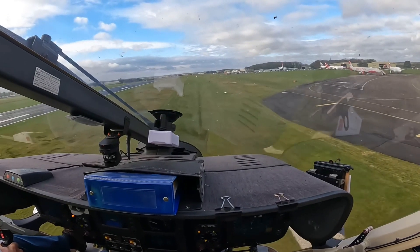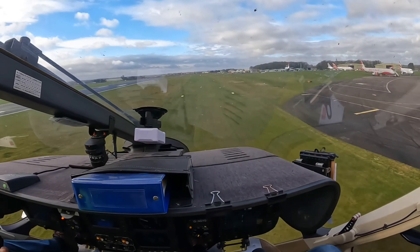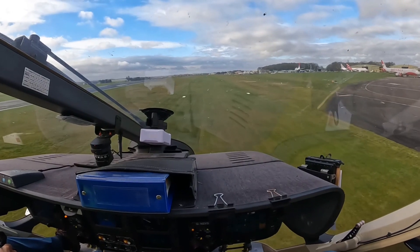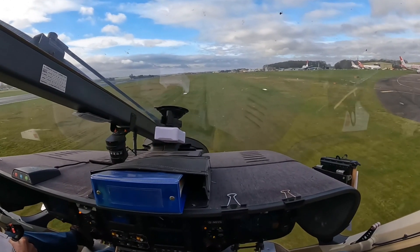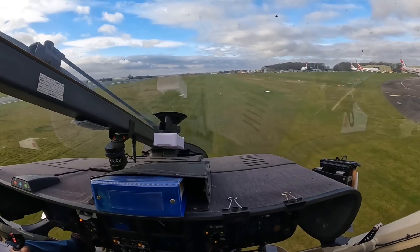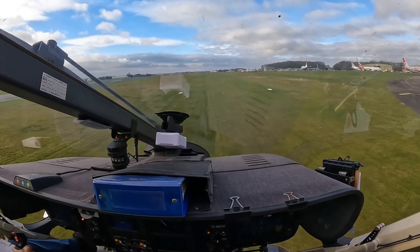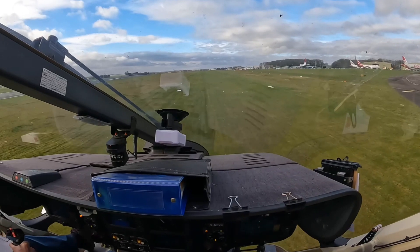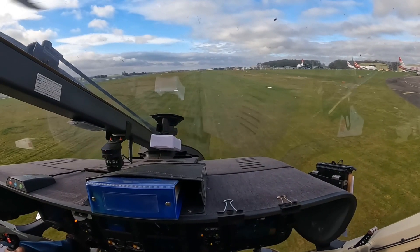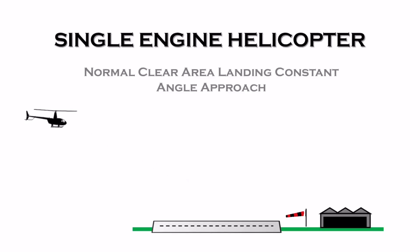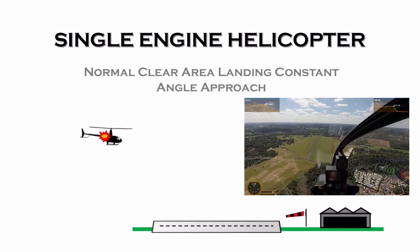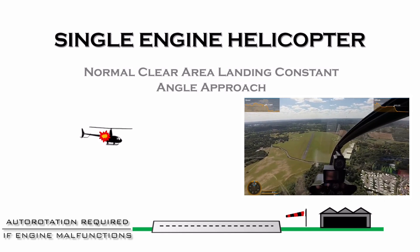The technique used for the touchdown landing to the ground after the approach is the same regardless of whether you're flying a single or multi-engine helicopter from the hover. The direction you're pointing is maintained using the tail rotor pedals. The lateral position is controlled using the cyclic to stop any movement, and the collective lever is slowly lowered to reduce height into a lower and lower hover until you're safely on the ground. In a single engine helicopter, if there was any engine malfunction on the approach a safe alternative landing has to be carried out, so be aware of what is underneath the helicopter when you're coming in to land.